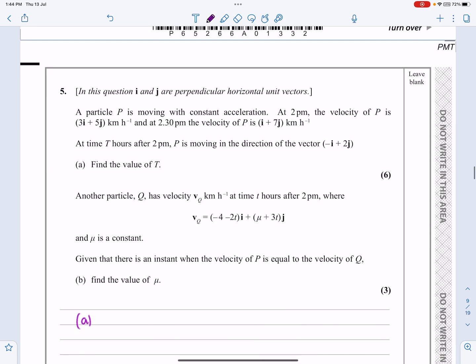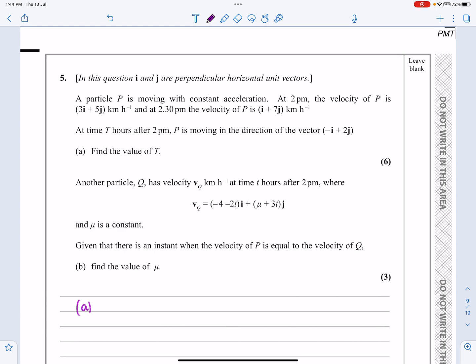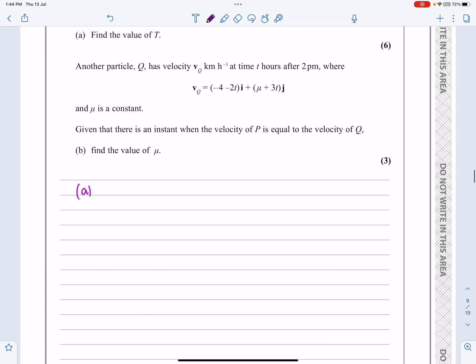Let's get started with part A, which is doing SUVAT from 2 to 2:30. Now, first of all, before we even jump into that, be aware that from 2 to 2:30, time is not 30, because our standard units are hours in this question. So from 2 to 2:30, the time period is going to be half an hour, not 30 minutes.